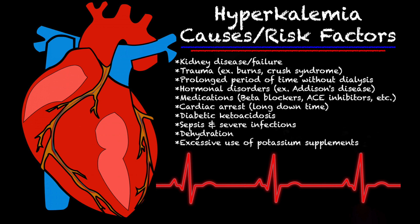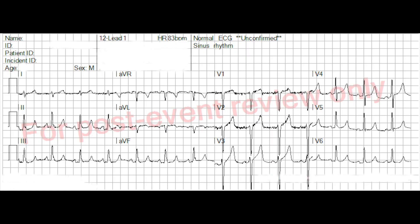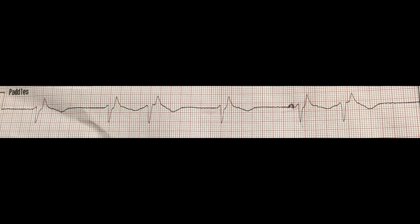Let's take a look at a few strips. Looking at this one, you can definitely see that the T waves are peaking in leads II, III, and aVF. With this patient, he was a middle-aged man experiencing diabetic ketoacidosis. He had a blood sugar of 460, uncontrolled type 1 diabetes, and hadn't been taking his insulin. His potassium level came back at 5.8.